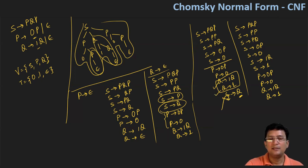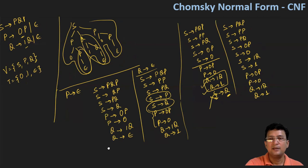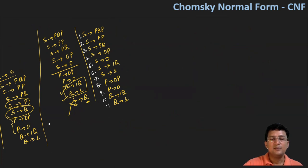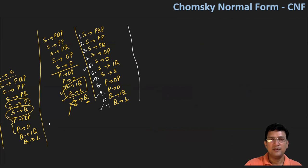Now with the grammar we have obtained, let's identify which productions are already in Chomsky Normal Form and which need further work. If we number the productions one through eleven, we can see that production five, seven, and nine are already in Chomsky Normal Form. First, let's expand production one: S produces PQP.